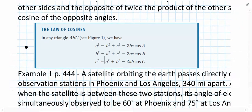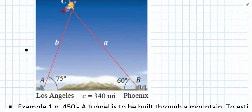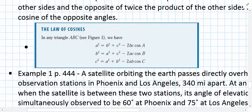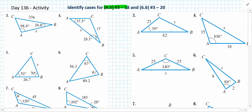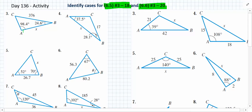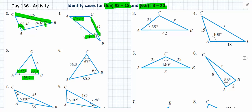We'll stop here and start tomorrow's class with worked examples using the law of sines and law of cosines. For tonight's homework, identify the case and which law would be used to solve problems — numbers 3 through 18 from section 6.5 and numbers 3 through 20 from section 6.6. Identify the three known values, determine which case they belong to, and use that to decide which law applies.